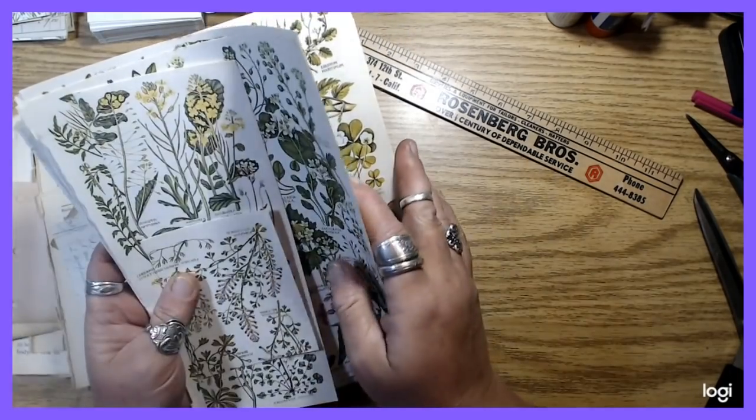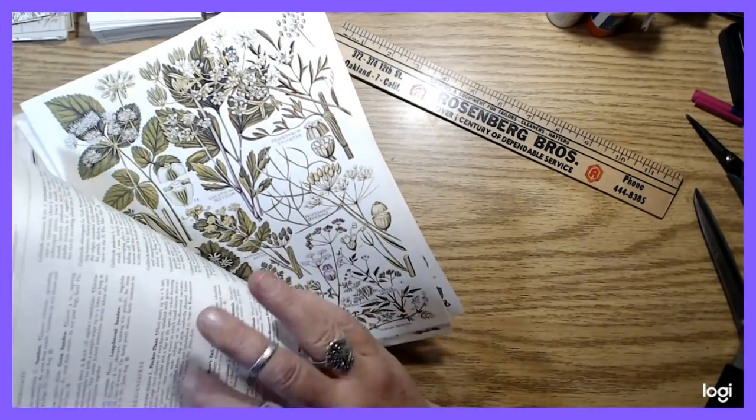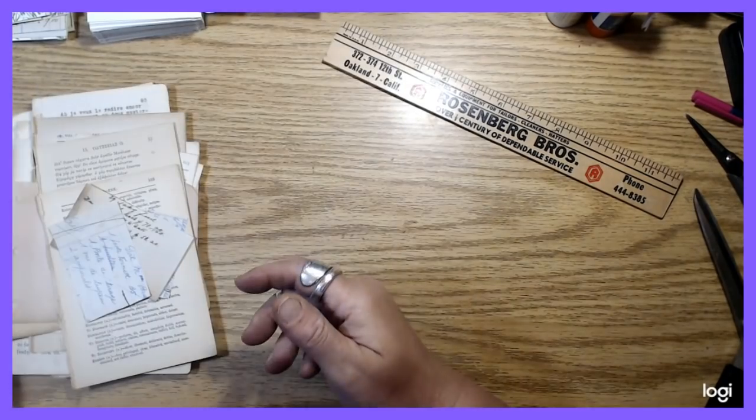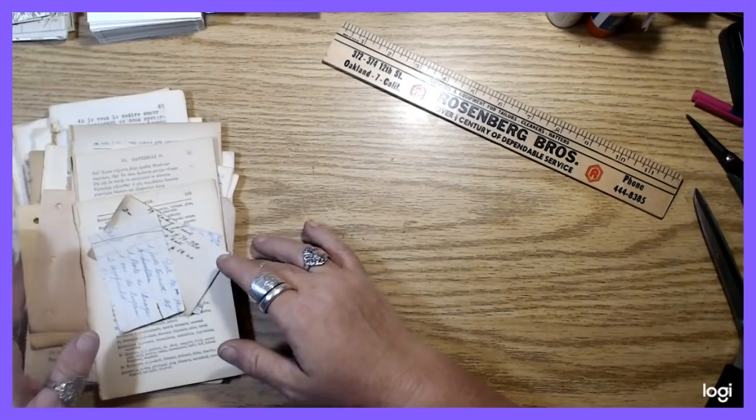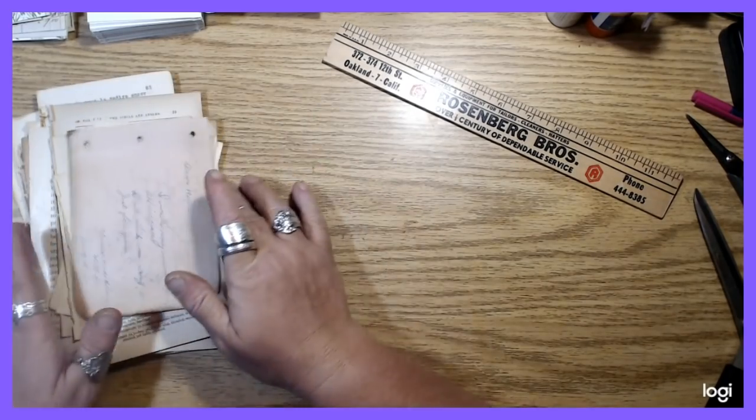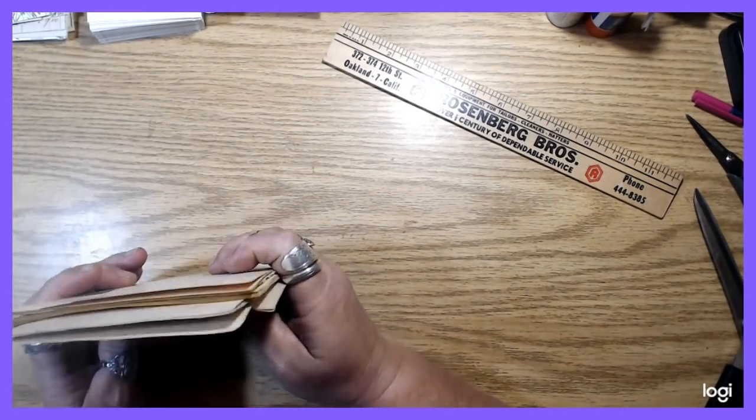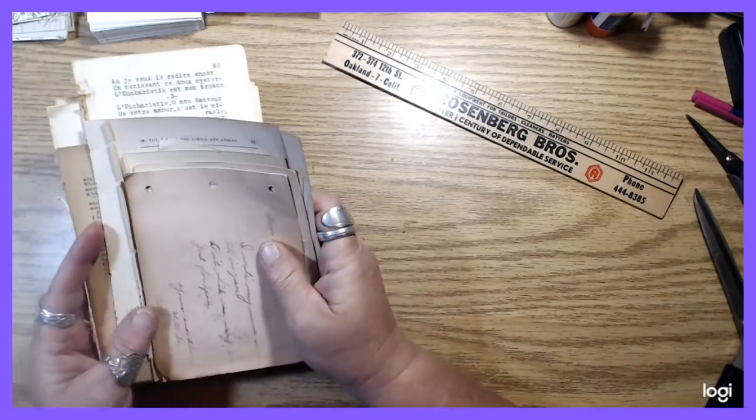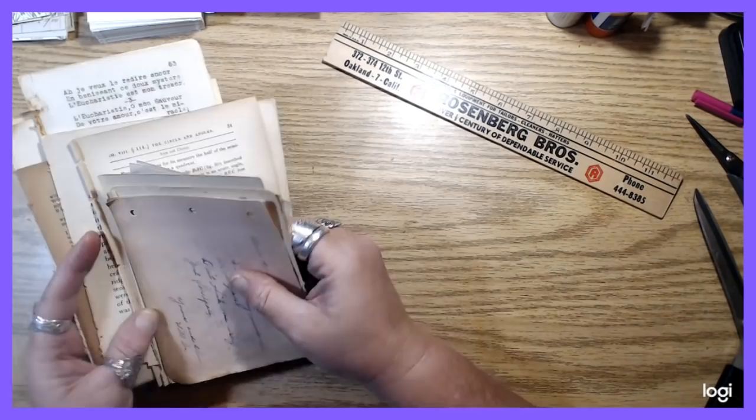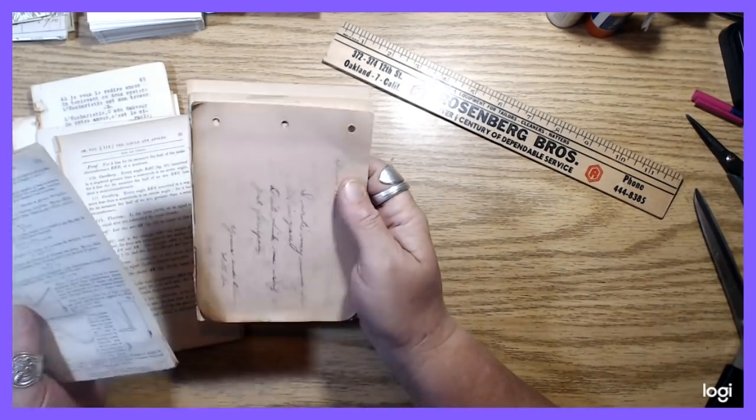This is a book that I saw on Tracy Fox's channel that she recommended as a source for botanical images. She's got a video where she talks about a bunch of different books that she pulls images from. It seems like in the UK, they've got tons of really cool flower books and stuff.